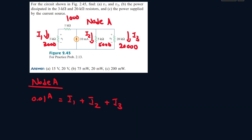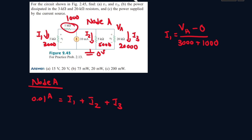Since this is one whole node, the voltage throughout it will be the same — let's call it Va. The ground node has a voltage of zero. Since current flows from high to low potential, i1 equals Va minus zero divided by the resistors it travels through, which are the 3000 ohm and 1000 ohm resistors — so that's 4000 ohms.